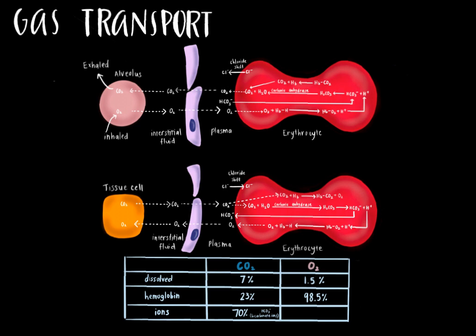Now let's look at the second diagram, which focuses on gas transport and systemic gas exchange, occurring at the interface of tissue cells and systemic capillaries. Tracking carbon dioxide: it diffuses from the systemic tissues into the red blood cells, taking one of three paths. Path one — 7% — involves carbon dioxide dissolving freely in blood plasma. Path two — 23% — involves carbon dioxide binding to hemoglobin, forming carbaminohemoglobin. Path three carries the remaining 70% in the form of bicarbonate ions with associated H-plus ions bound to oxyhemoglobin.